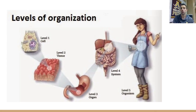They start with the most simplistic, being the cell, then they build up to the tissues, then the organs, then the organ systems, and the organism. Now, this image here is depicting that of an animal — a human.